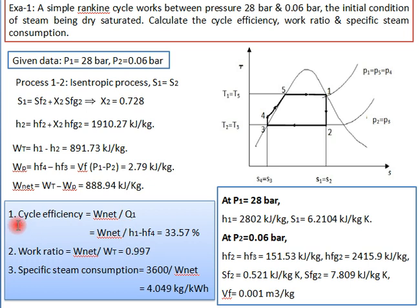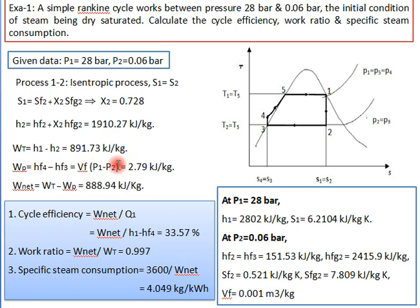For cycle efficiency: η = W_net / Q1, where Q1 = h1 - hf4. Since hf4 = hf3 + W_p = 151.53 + 2.79 = 154.32 kJ/kg, we get Q1 = 2802 - 154.32. Substituting W_net = 888.94, the cycle efficiency works out to 33.57%.